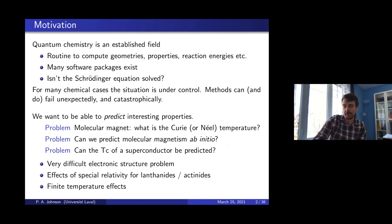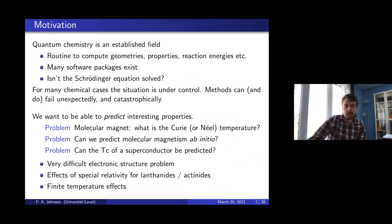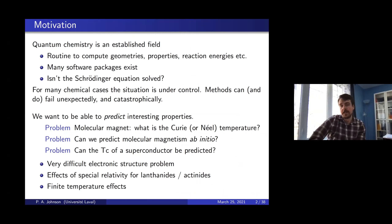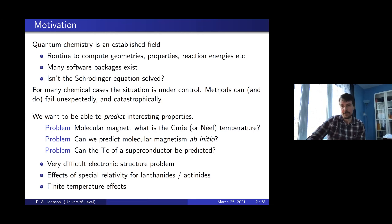This is a very difficult electronic structure problem, which is what we're working on. There are lots of other effects to take into account as well. For now we're going to focus on the electronic structure, because that's one part we feel we can reasonably attack. Relativity is not a huge effect for chemistry but it is important. There are also things to worry about at finite temperature, because molecular magnetism and superconductivity are temperature-dependent phenomena — they stop and start at certain temperatures — and you need to do these giant calculations at finite temperature, which becomes much more complicated.